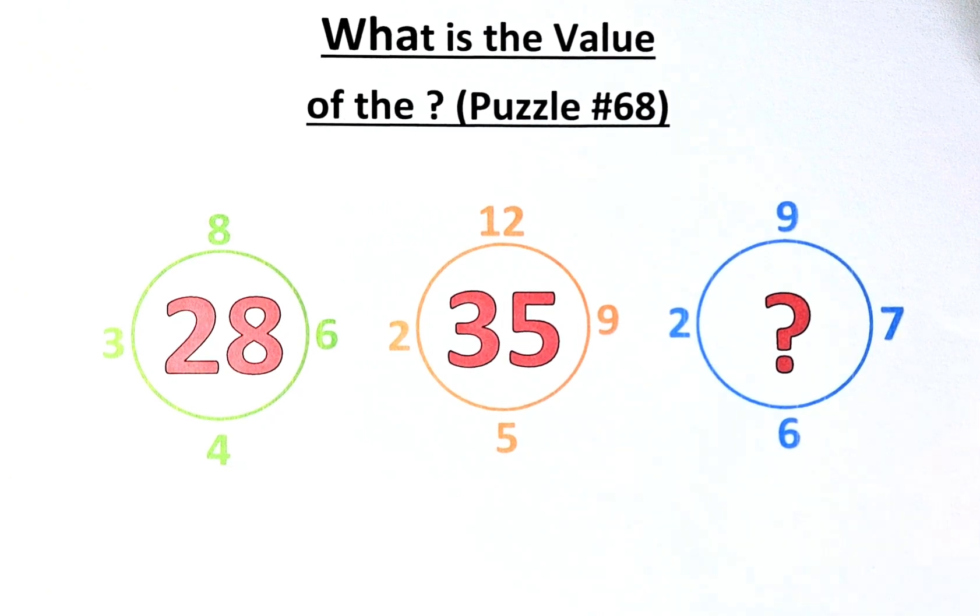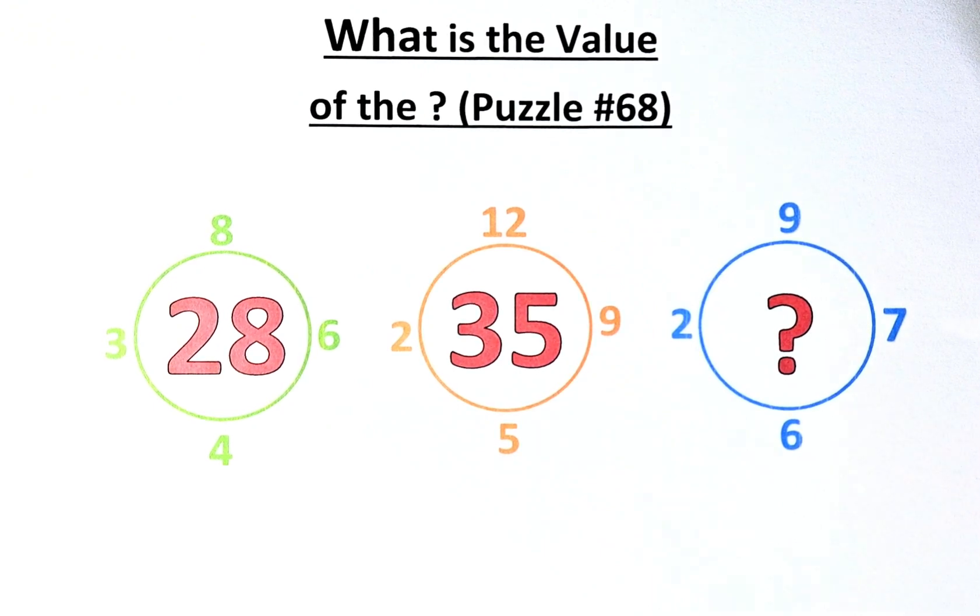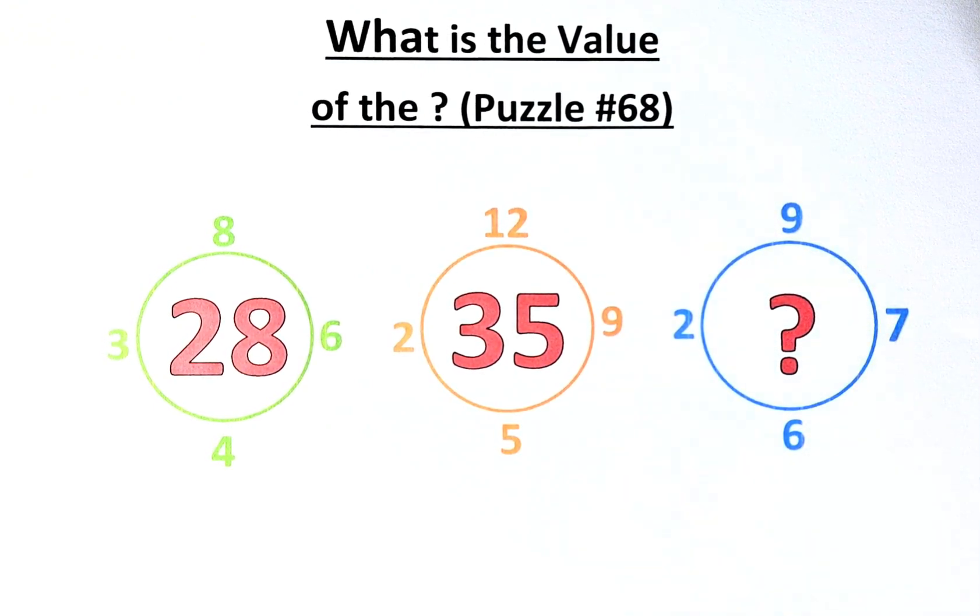The numbers in the puzzles are as follows. In the first circle, we have 3, 8, 6 and 4 and the middle number is 28. In the second circle, we have 2, 12, 9 and 5 and the middle number is 35.